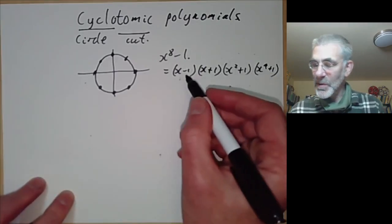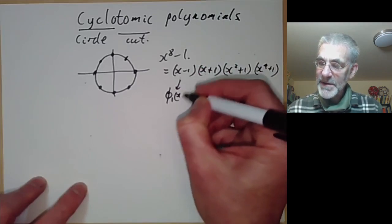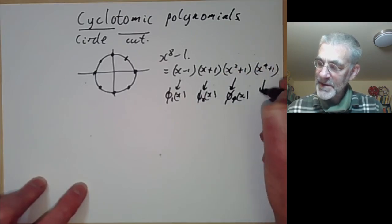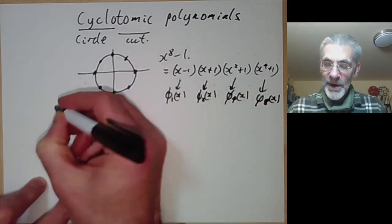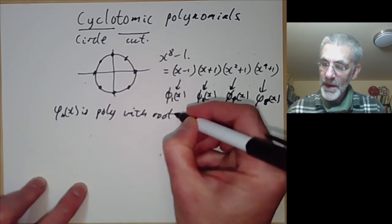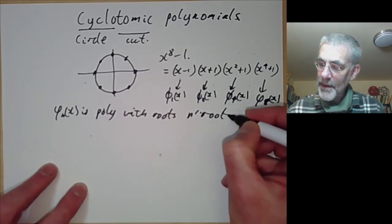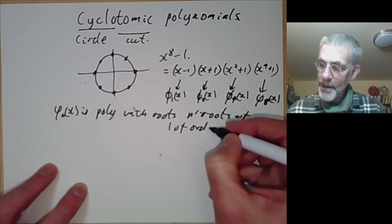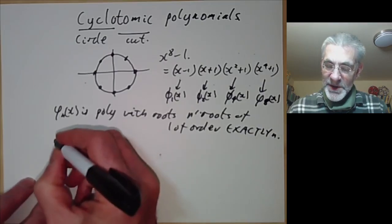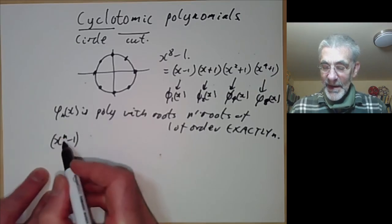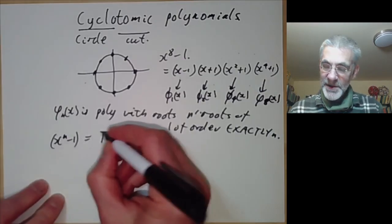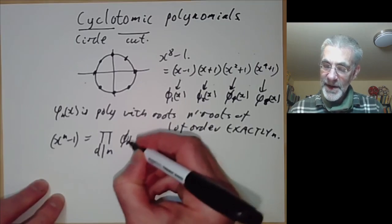Now, these factors are the so-called cyclotomic polynomials. So this is φ_1(x), this is φ_2(x), this is φ_4(x), and this is φ_8(x), where φ_n(x) is the polynomial with roots the nth roots of 1 of order exactly n. It's pretty obvious that the nth roots of 1 are of order exactly d for some d dividing n. So this is just a product over d dividing n of φ_d(x).